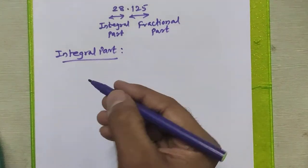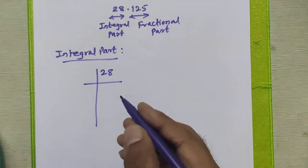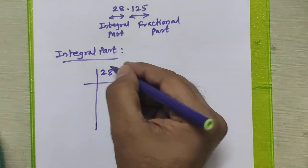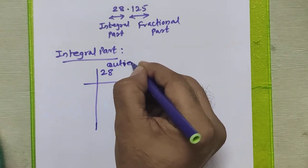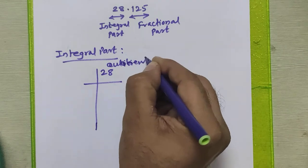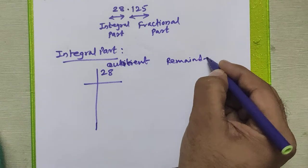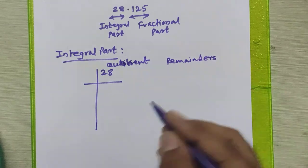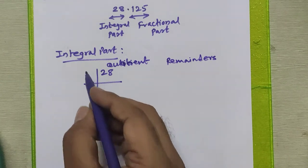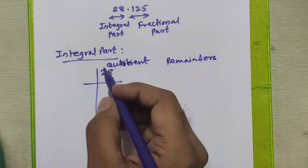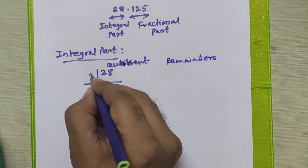To convert 28 to binary, we are going to follow this procedure. We will prepare a structure for division with quotient and remainder columns. We are going to successively divide the given decimal number by 2 until the quotient becomes zero, and for each step we are going to write the remainder aside.